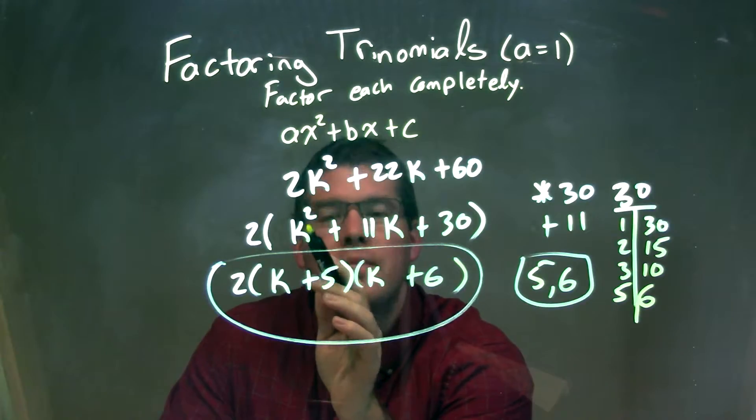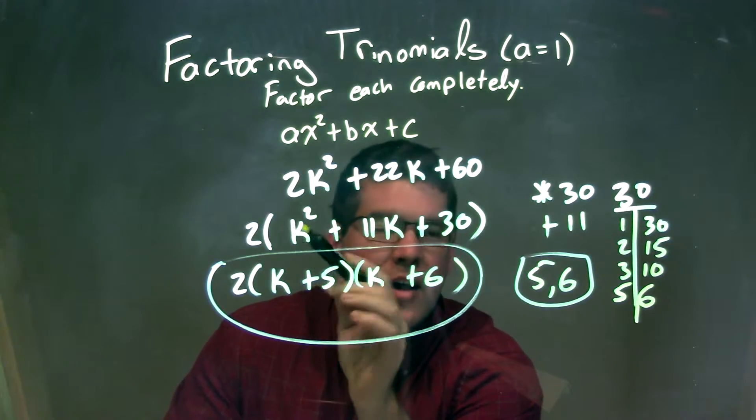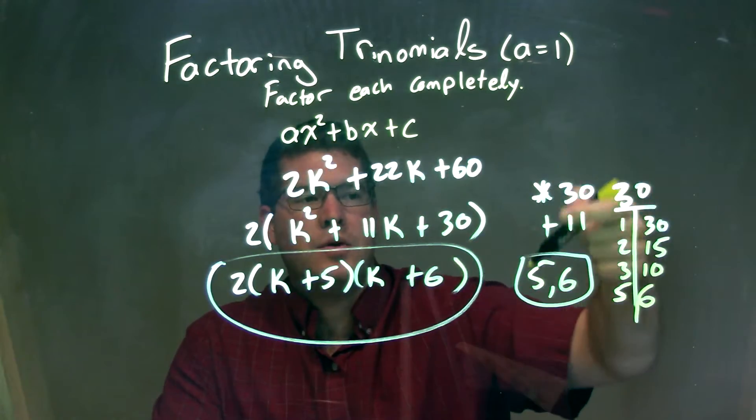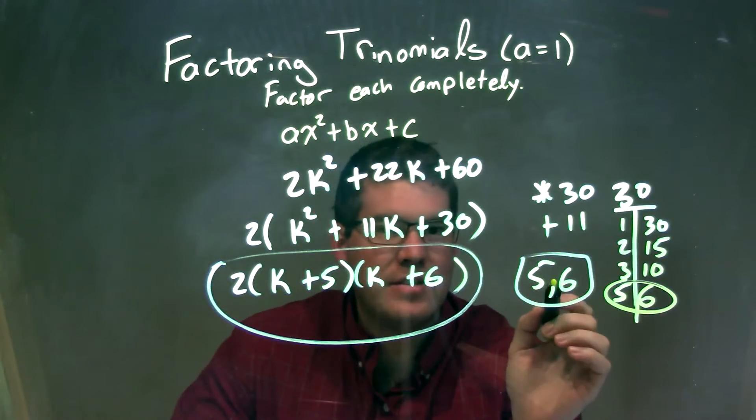Then from there, I noticed that I had an a value of 1, so I asked myself what two numbers multiplied to 30 and added to be 11. And those two numbers were 5 and 6.